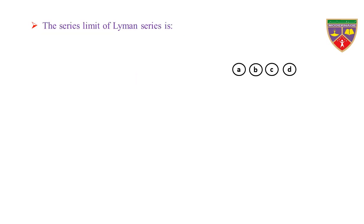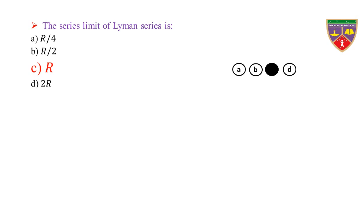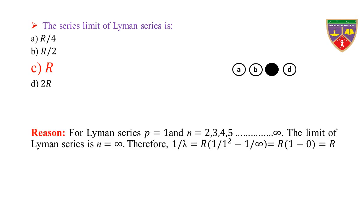The series limit of the Lyman series is: Option A, R/4; Option B, R/2; Option C, R; Option D, 2R. The key is R. Therefore, the correct option is C. Reason: for Lyman series, p = 1 and n = 2, 3, 4, 5, and so on. The limit of the Lyman series is n = infinity. Therefore, 1/λ = R(1/1² − 1/∞) = R(1 − 0) = R. Hence, the series limit of the Lyman series is R.